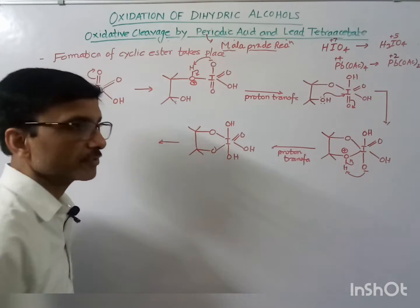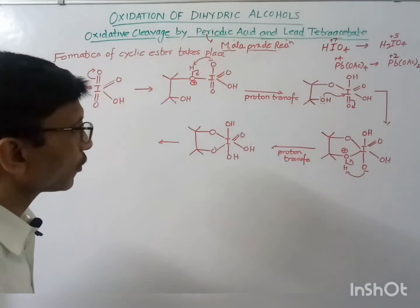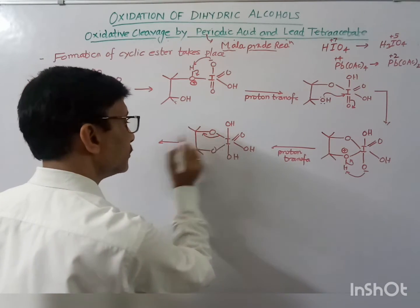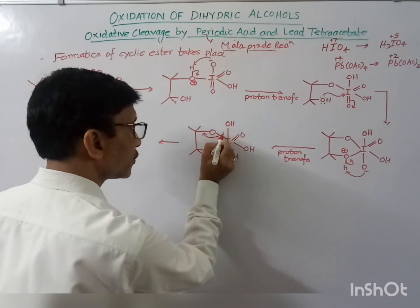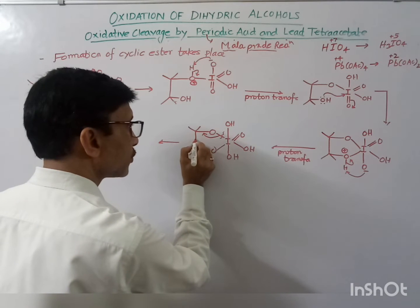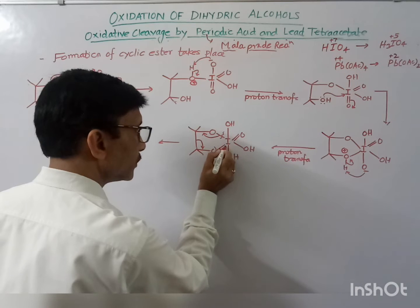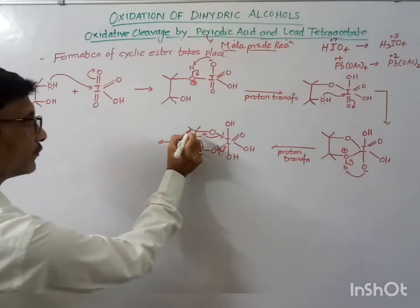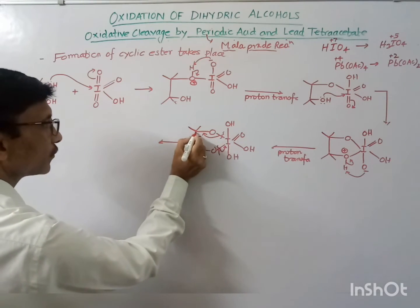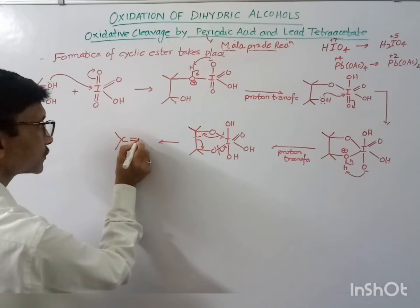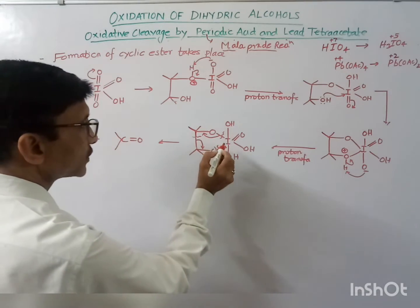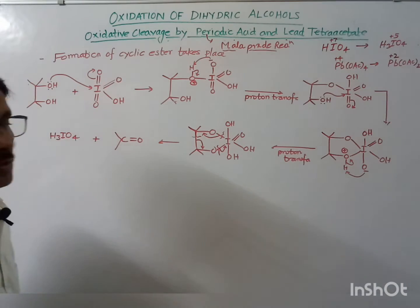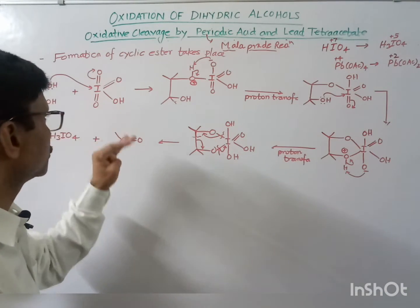In the next step, the oxygen-iodine bond, being a weak bond, breaks and a double bond is formed. Then the carbon-carbon bond also breaks — three bonds are breaking altogether. As a result, two molecules of the carbonyl compound are formed, plus H3IO4 is produced. This is the simple mechanism for the oxidative cleavage.